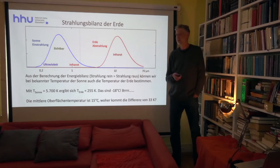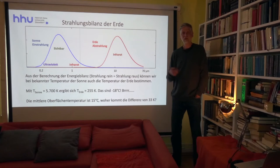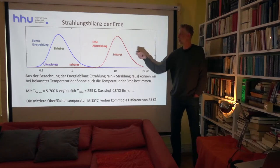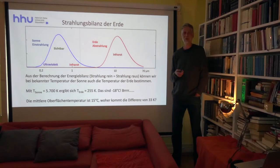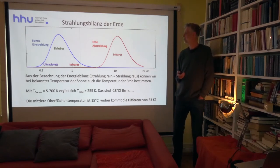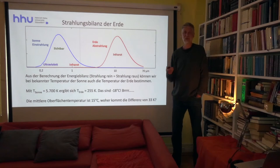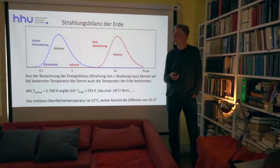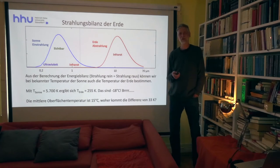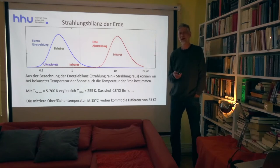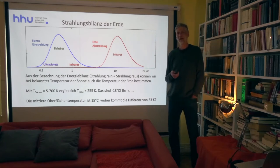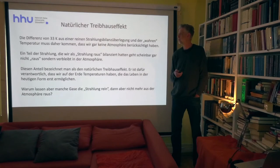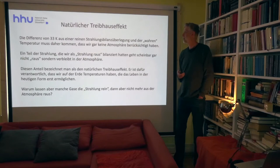Die Differenz von 33 Grad zwischen minus 18 und plus 15 muss irgendwo ein Fehler im Modell sein. Das Modell war hier denkbar einfach: Wir haben so getan, als hätte die Erde keine Atmosphäre. Für Himmelskörper, bei denen das zutrifft – wie der Mond –, kann man mit solchen Modellen sehr gute Durchschnittstemperaturen ausrechnen. Aber nicht für Planeten, die eine Atmosphäre haben, und vor allem eine Atmosphäre mit infrarotaktiven Molekülen.